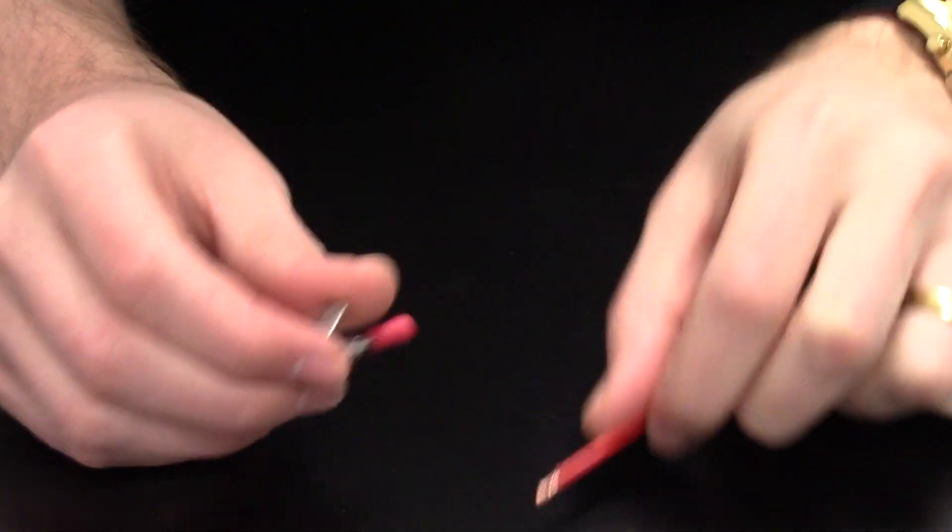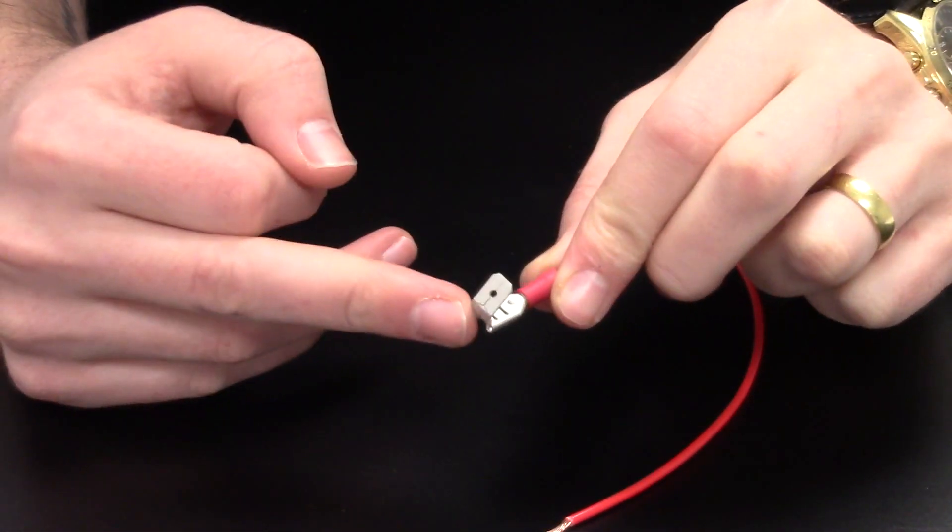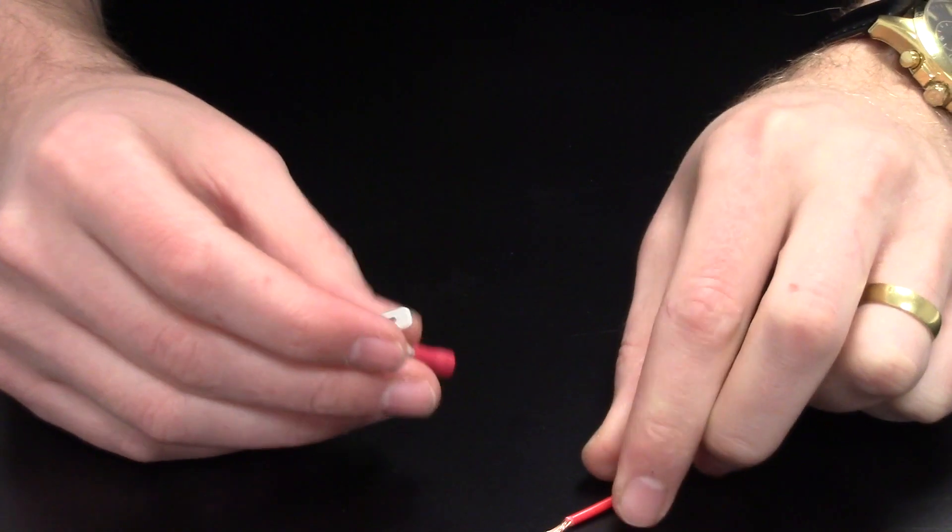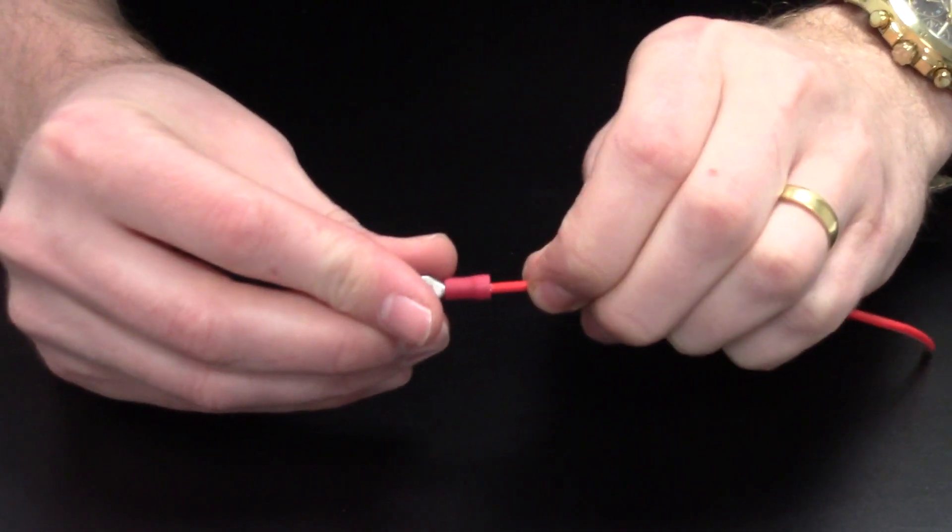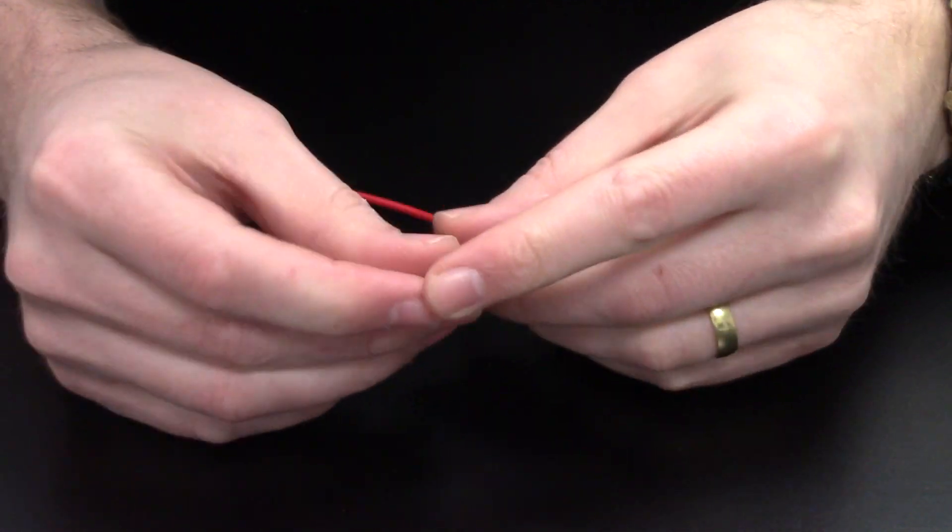Now we'll show you how to crimp these terminals. Here you can see we've got our 0.5 to 1.5mm² terminal in red which is a piggyback terminal. These are helpful for making multiple connectors.